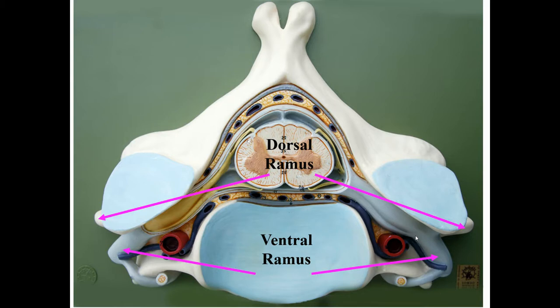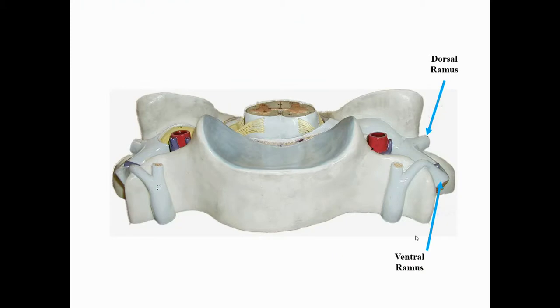The rami are branches of the nerve, not roots. The dorsal ramus goes to the structures of the back — muscles and skin behind the spinal cord. The ventral ramus goes to structures anterior to the spinal cord, including organs like the heart, lungs, and abdominal organs, plus muscles and skin. There's much more structure in front of the spinal cord than behind, so the ventral ramus is the larger of the two rami.